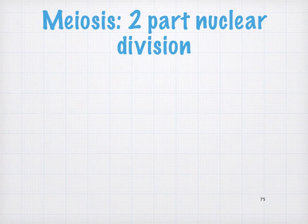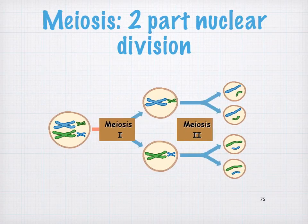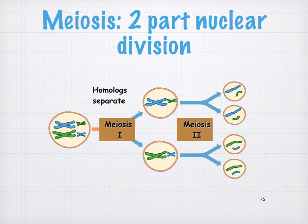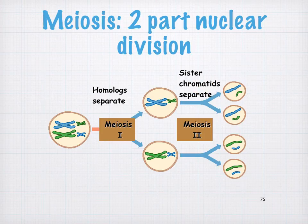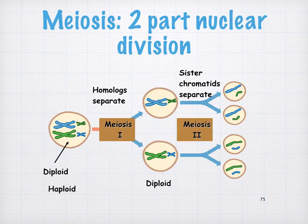Just to recap, meiosis is divided into two parts: meiosis I and meiosis II. In meiosis I, the two homologous chromosomes separate, and in meiosis II, the sister chromatids separate. Remember that it goes from a diploid cell, and eventually you get a haploid cell.